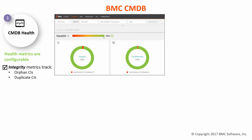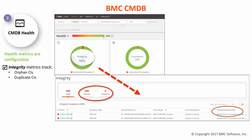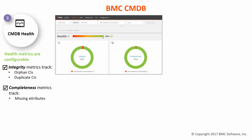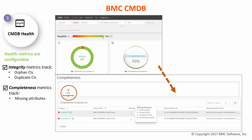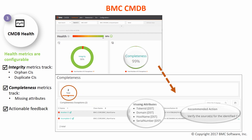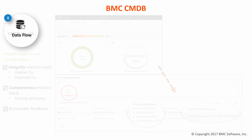The integrity metrics track the orphan and duplicate CIs, while the built-in actionable feedback helps you resolve these exceptions. Similarly, the completeness metrics track the missing attributes for CIs and again provide actionable feedback.